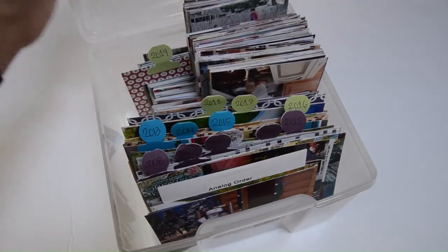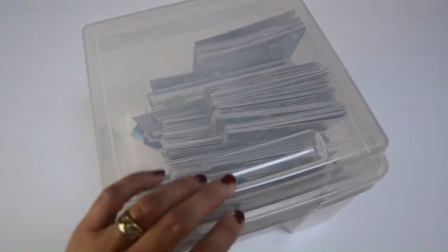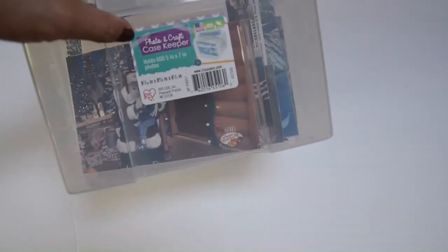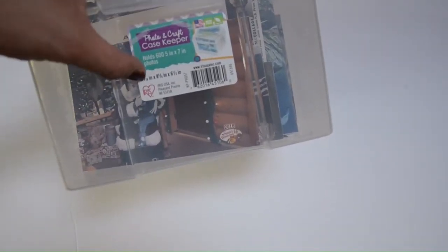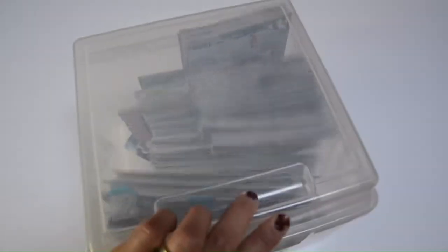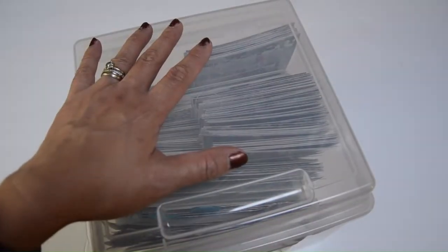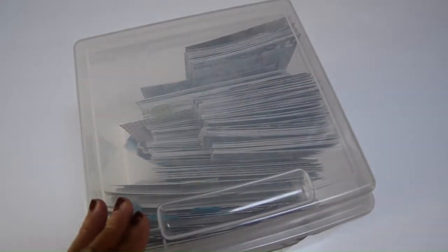Now before I go to the inserts, let me talk about this container. I just got this at Joann's. This is what they call the Photos and Craft Case Keeper by Iris Container. It's actually supposed to be for cards where you can store your finished cards. It actually comes with inserts like these.